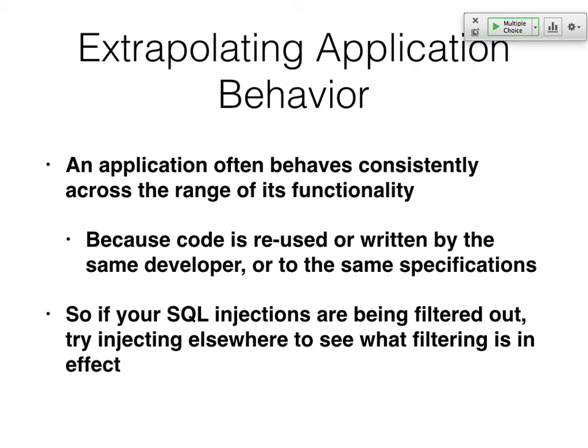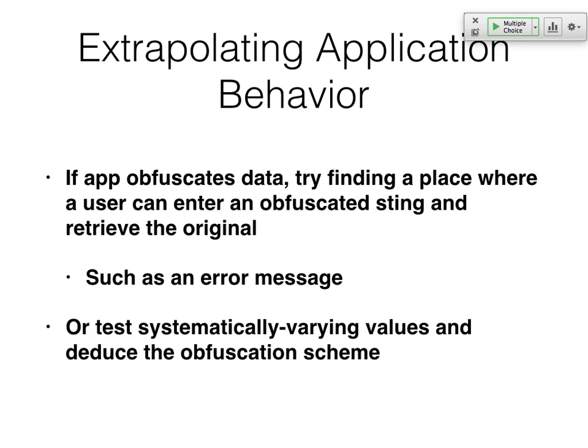If the app is consistent — which it typically is, since most people write some standard routine and use it over and over — then if there's a SQL injection vulnerability but your code is being filtered out, you might go to some other part of the code to see what the filter is, because they might use one filter for the whole site. Maybe comments go through the same filter and you can find a way to see what it does. If the app obfuscates data in some way, find somewhere you can observe the technique — if they use one technique, they'll keep using the same one throughout.